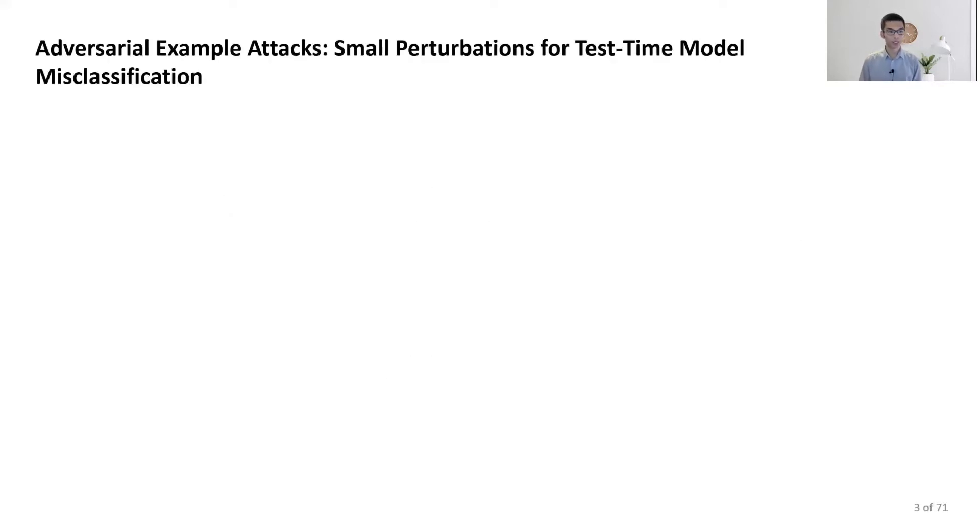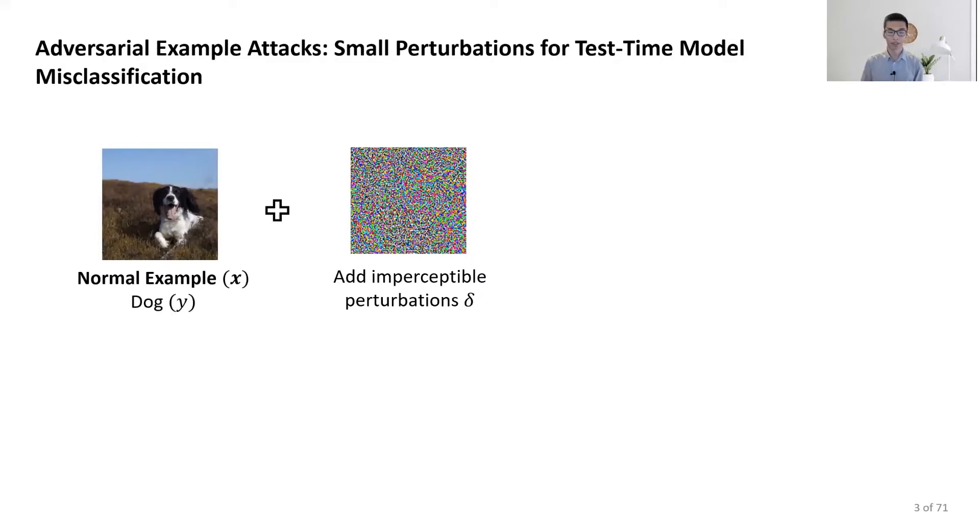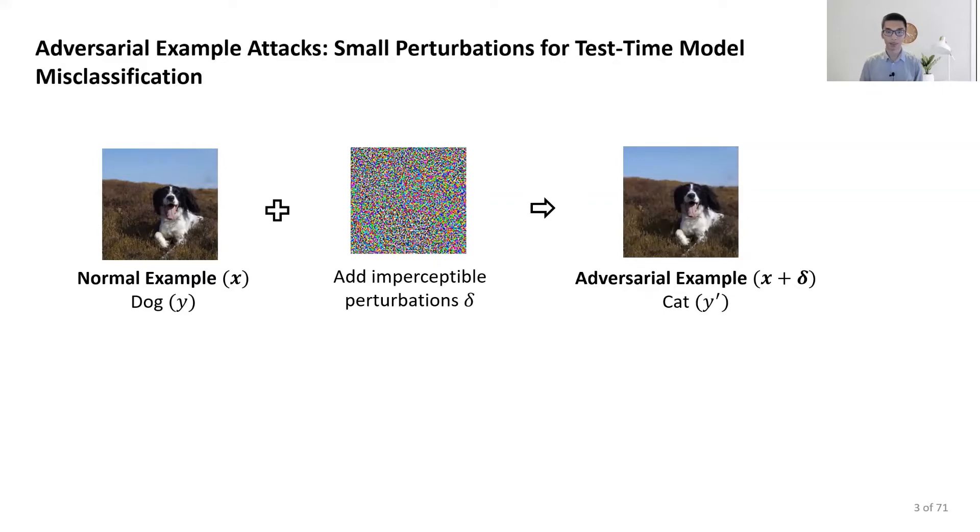To start with, I believe most of you are familiar with adversarial examples. Given an input image, an attacker tries to add some imperceptible perturbation to generate the adversarial example for test-time model misclassification. The perturbation delta can be generated by maximizing the loss between model output and ground truth label. This attack imposes a threat to our machine learning models.